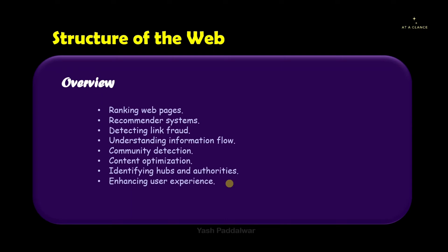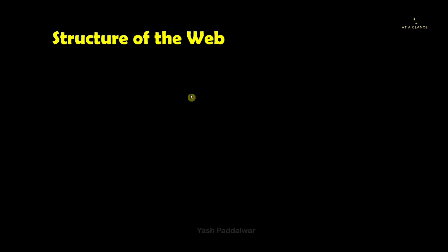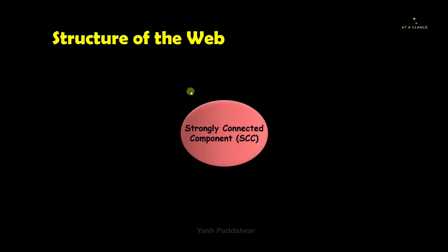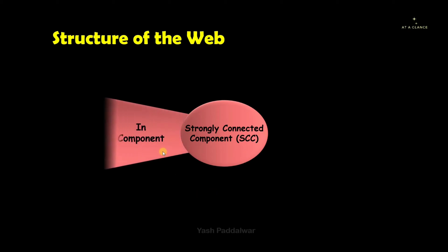So overall, I hope the overview of the structure of the web is clear to you all. Now let's move on to the diagram of the structure of the web. It consists of different components. The most important component is the strongly connected component, which is called SCC.